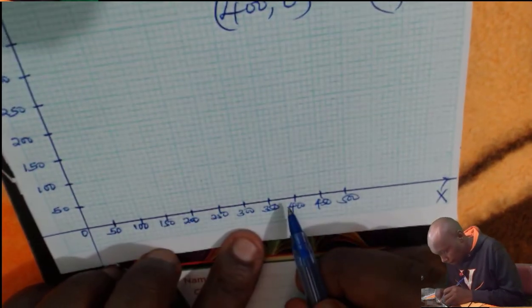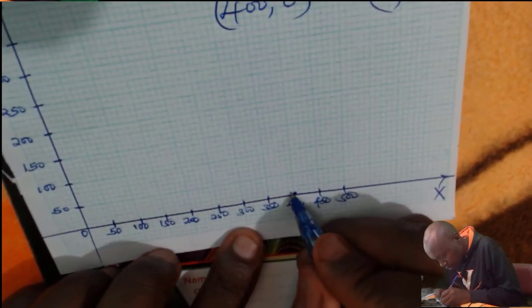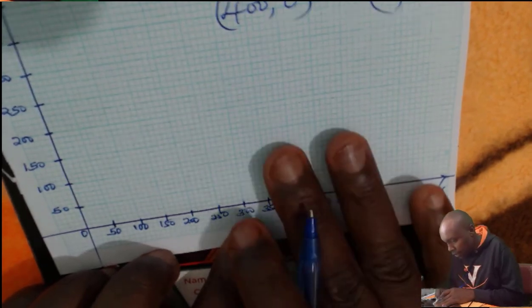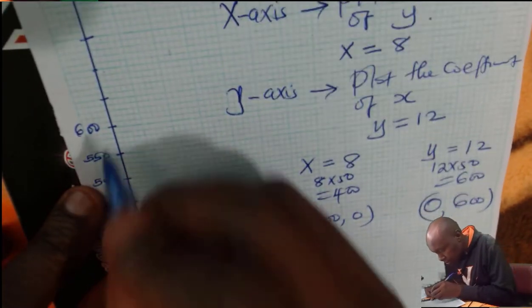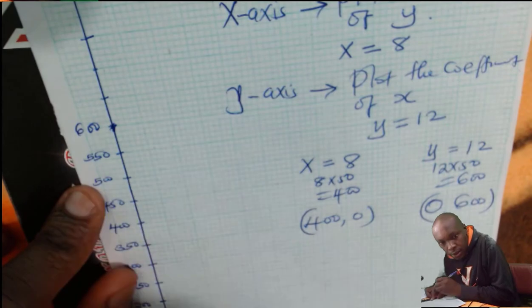x, 400, 0, is here. That is where it is. It is here. Then y, 0, 600, is here. That is where it is.